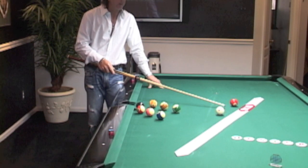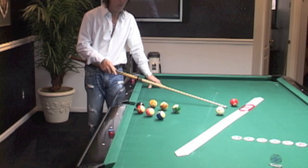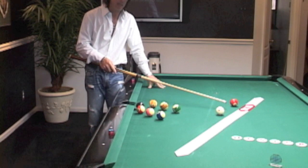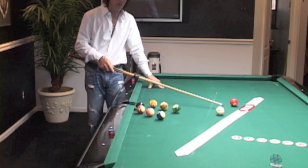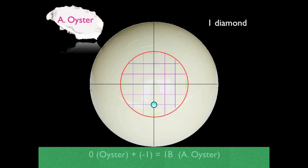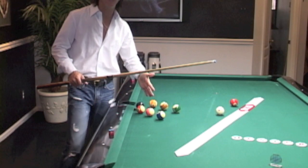So what do I need to do? I can't change the angle. I don't want to change the speed. I need to change the spin. I'm going backwards, so I'm going to add negative. Negative is going down below the oyster. So I start off with zero. I need to add two diamonds of backspin to that, each diamond representing a half a tip. That puts me at one tip below center. So now my adjusted oyster is zero for my angle, two for my speed, and one B for my spin choice. And that will put me right in position for the eight ball.